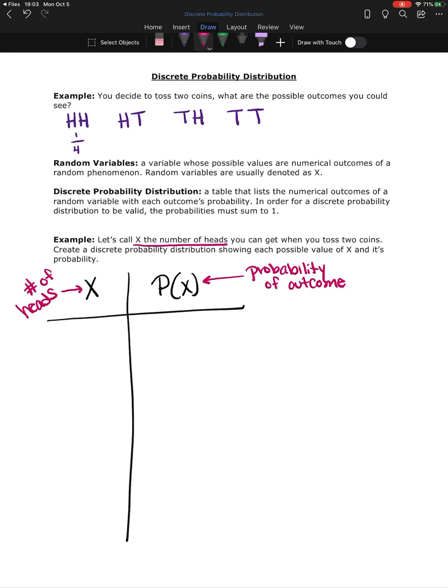So for this X column, I'm not going to list out the outcomes as heads, heads, heads, tails, and so forth. I'm going to list it in terms of how many heads did I see. So for example, when we listed out the possibility of two tails right here, two tails means that we see zero heads. So one possibility for the number of heads that we see is zero. If we get two tails, then we have zero heads.